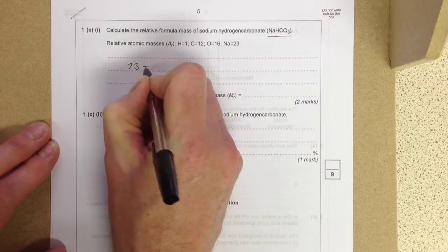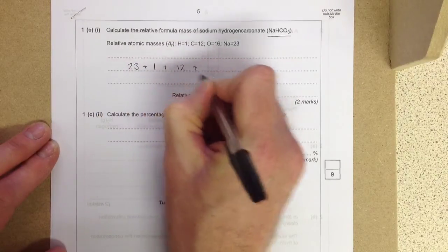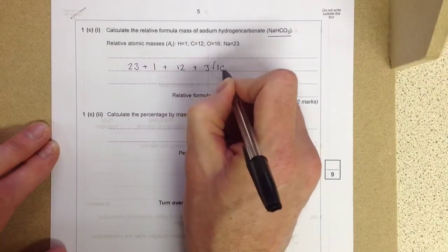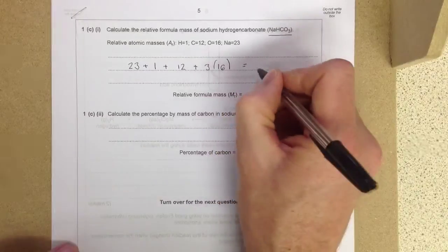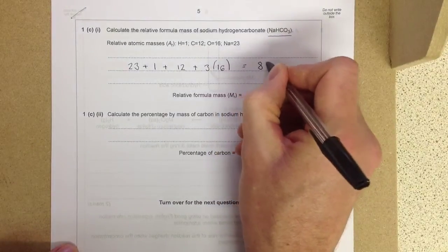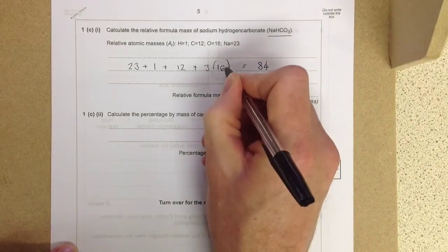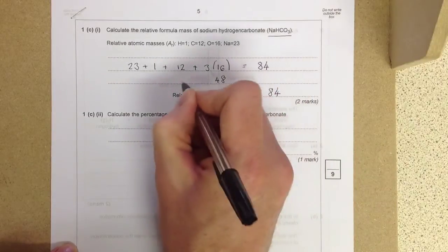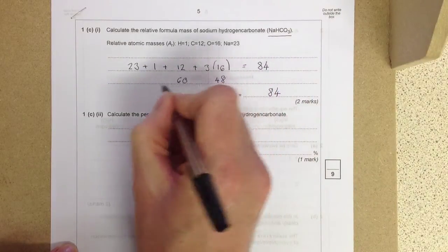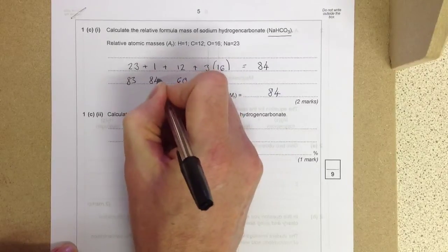23 plus 1 plus 12 plus 3 lots of 16. Using a big trick of mental maths, and I get the answer 84. And I'll put that down here. 6, 12, 18, then plus 3, that'll be 48. Plus 12, that'll be 60. 60 plus 23, 83 plus the 1, 84.